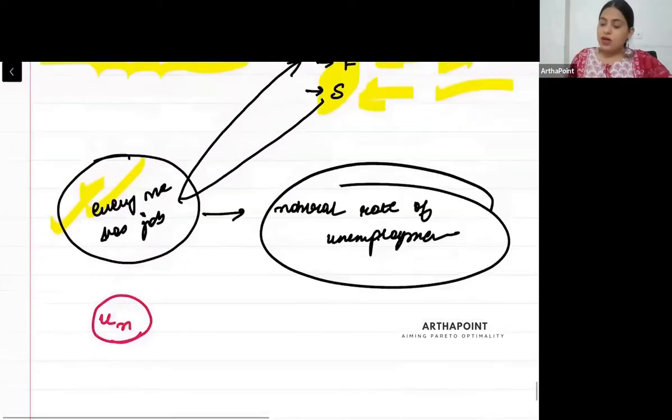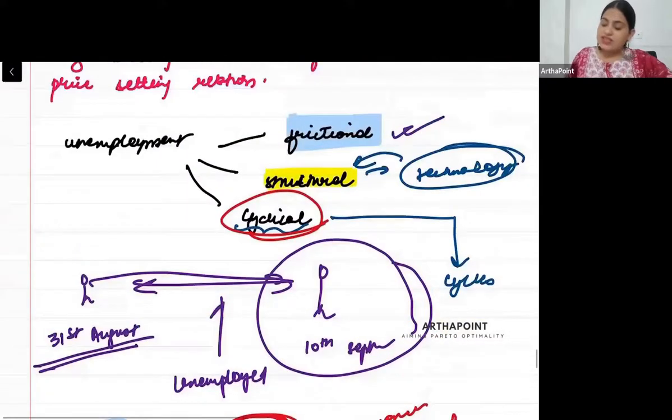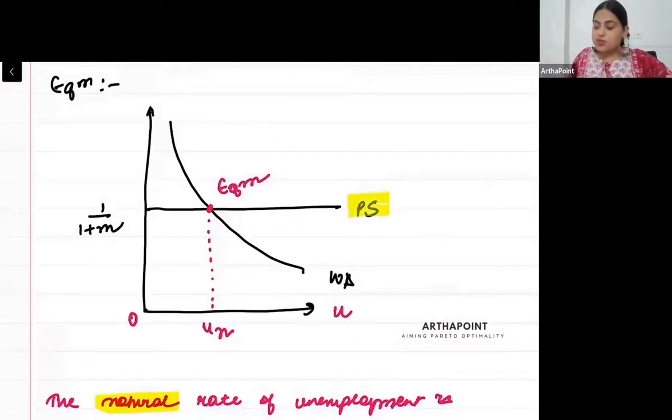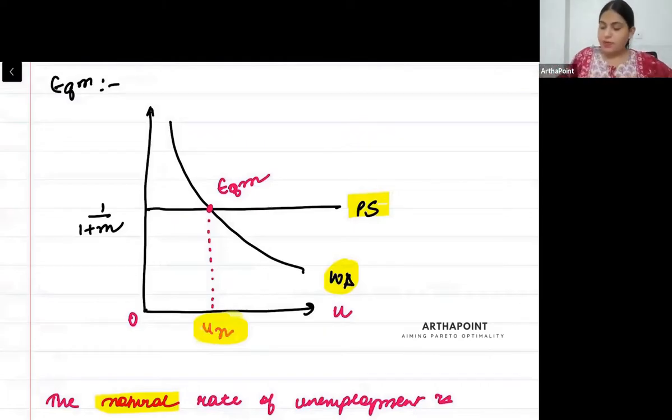Now we said that where the wage setting and price setting relationships equate, the equilibrium that occurs there is the natural rate of unemployment. That is actually the true equilibrium. At this rate, at this point where equilibrium occurs, everyone has a job. The only people unemployed are due to structural and frictional reasons.